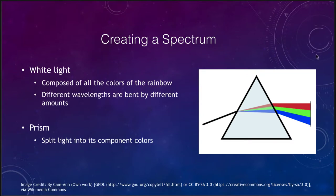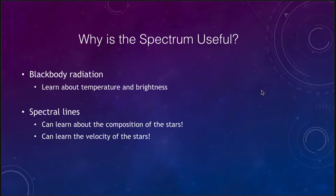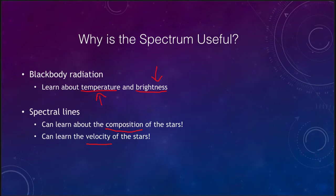Why is this so useful? When we talked about the blackbody spectrum, that was able to tell us things about temperature and brightness of stars. We could look at images of stars to see how much light they were emitting and use colors to tell us temperature. But when we actually get the spectrum, we can learn things about composition — what stars are made of — and how the stars are moving. How do we find out what a star is made of when we can't go get a sample? We use its spectrum to determine that.